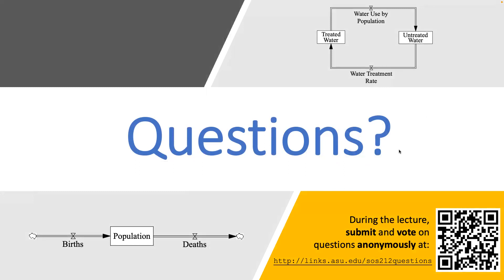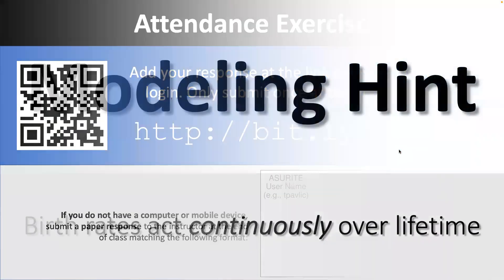We're going to step through some of the trickier parts of the assignment so we're all prepared. Some things I don't give you — like the birth rate — but we'll talk through what a birth rate formula might look like, and you could totally use the one we develop here. When you get to that part in the assignment, you can go back to the lecture and try to fill it in.